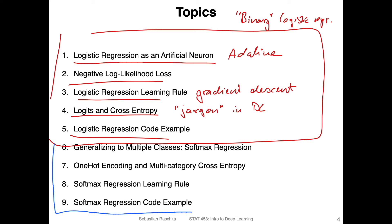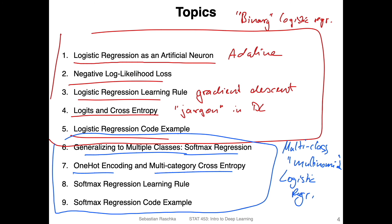And then the second part would be multi-class, also called multinomial logistic regression. And another word for multinomial logistic regression is softmax regression. So we will talk about that. And for that, first of all, we will introduce the model. For that, we will need something called one-hot encoding, which I will then introduce. It's just a format that we can use to represent categorical data. And then I will also introduce the multi-category cross entropy loss, which is an extension from the binary cross entropy. Then we will talk about the softmax regression learning rule, essentially gradient descent for softmax regression. And then I will also show you a code example.